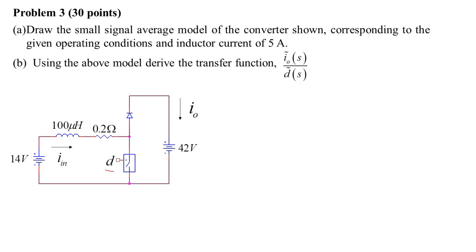It is not required to draw the full average or large signal average model, but since we have to draw the small signal model, it may be useful to draw the full average model first. That makes it easier to derive the small signal model and also obtain the required steady-state values. So the approach will be to draw the large signal or full average model, which also has a transformer where the duty ratio is a time-varying quantity.